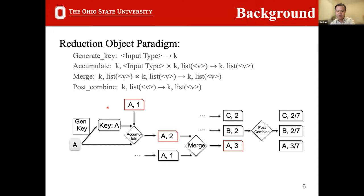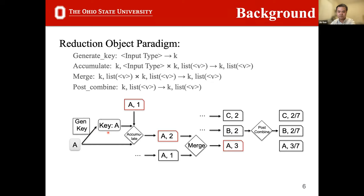For a given input element, a key is generated pointing to a specific reduction object, and the input element is immediately accumulated onto that object. Once all inputs are processed, accumulators from different threads are merged and post-processed to yield the final result. Similar to standard MapReduce, this process can be mapped to multi-core and multi-machine environments, but by improving the access locality of intermediate results, the reduction object achieves significant speedup over Hadoop MapReduce and Spark.